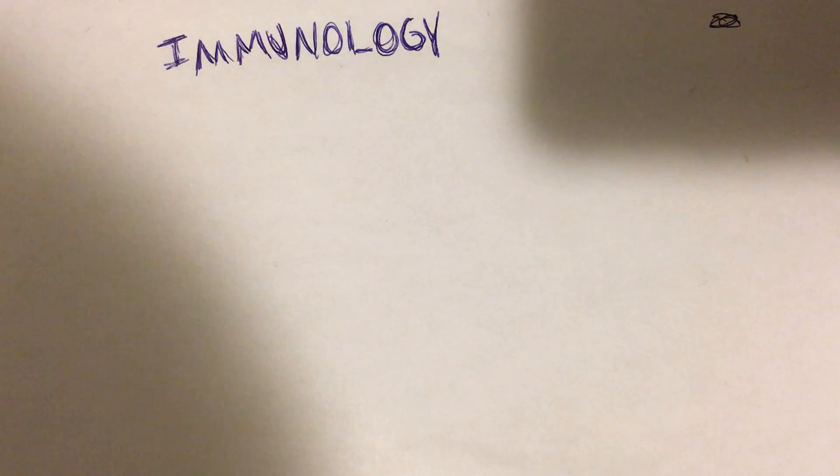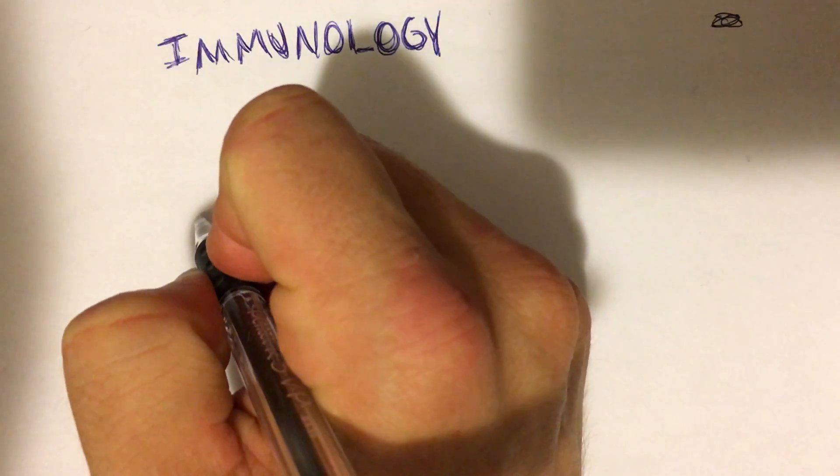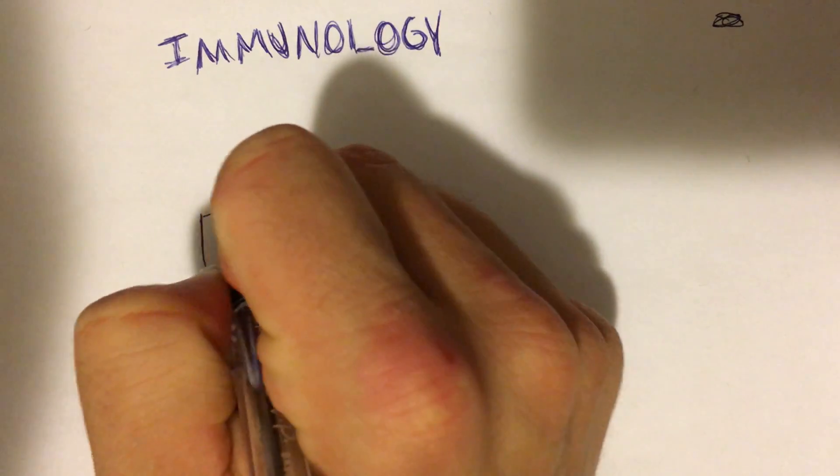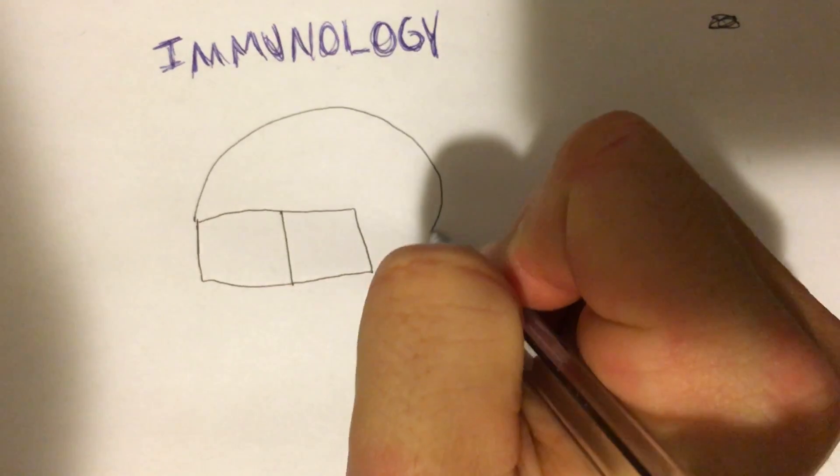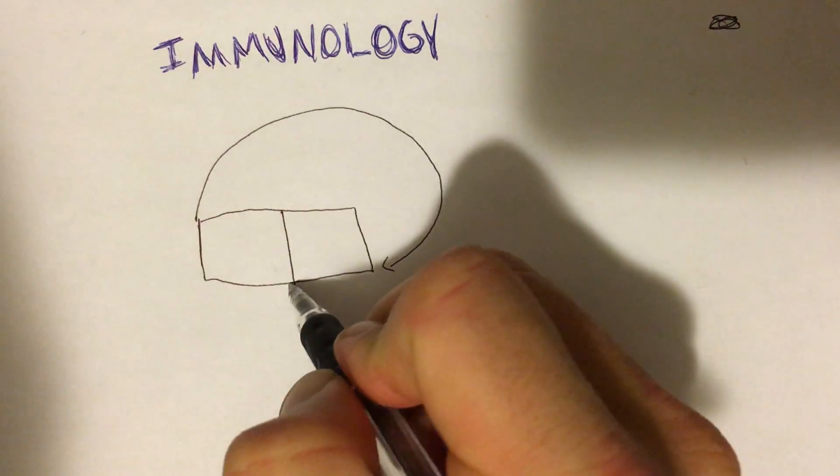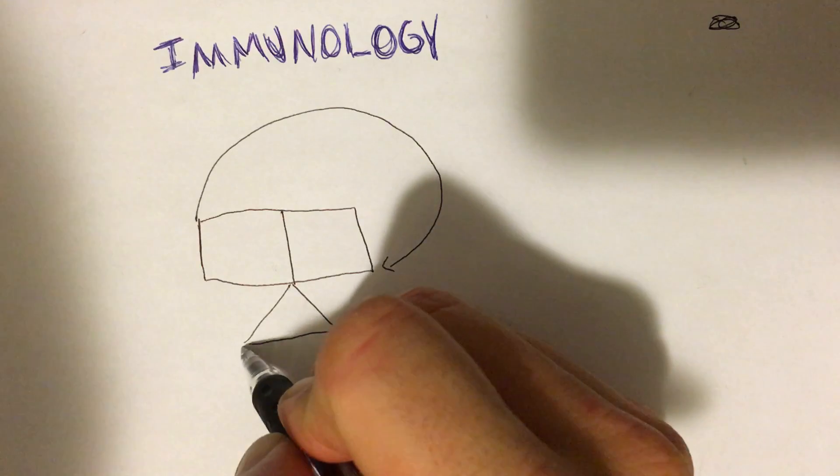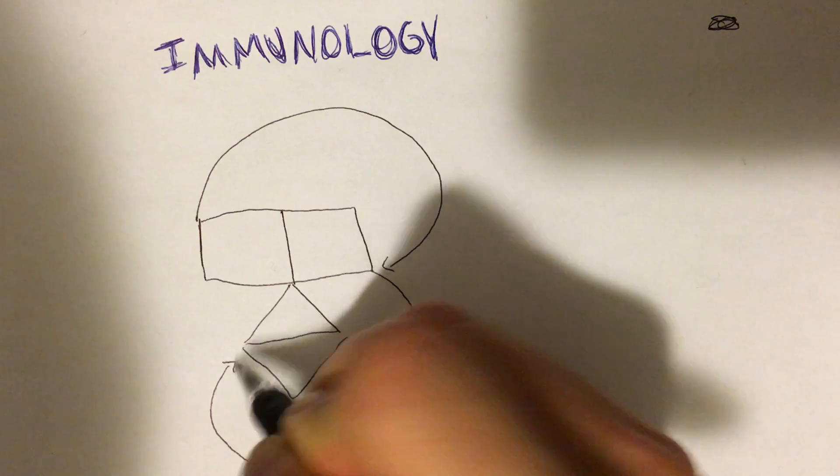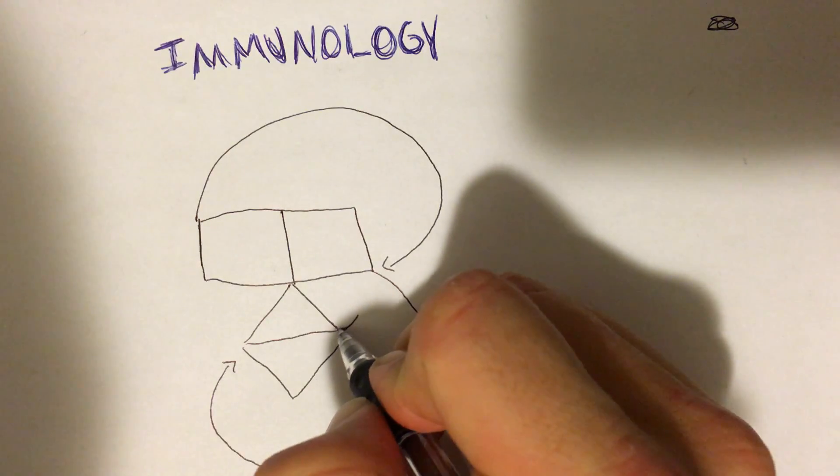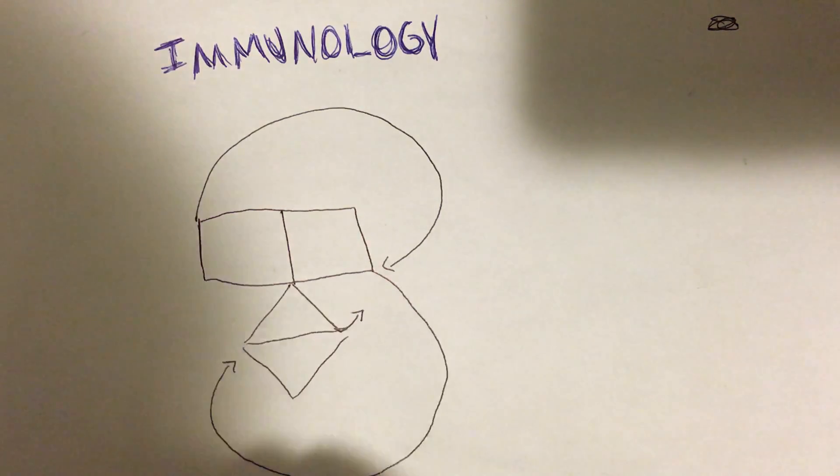It basically looks like a cartoon character, so I'm just going to draw that structure really quickly. Start out with the eyes, you've got its head here, it's got a mouth, then it's got this chin, it's got this little mustache. The mustache is really important, you'll see.